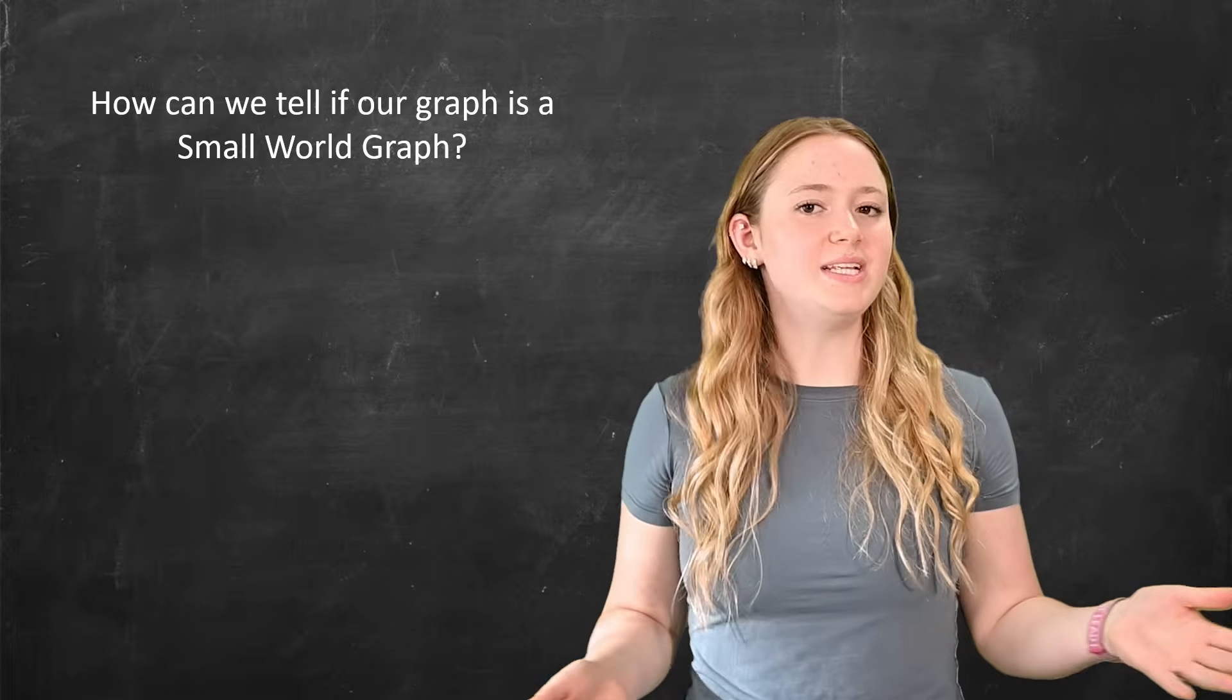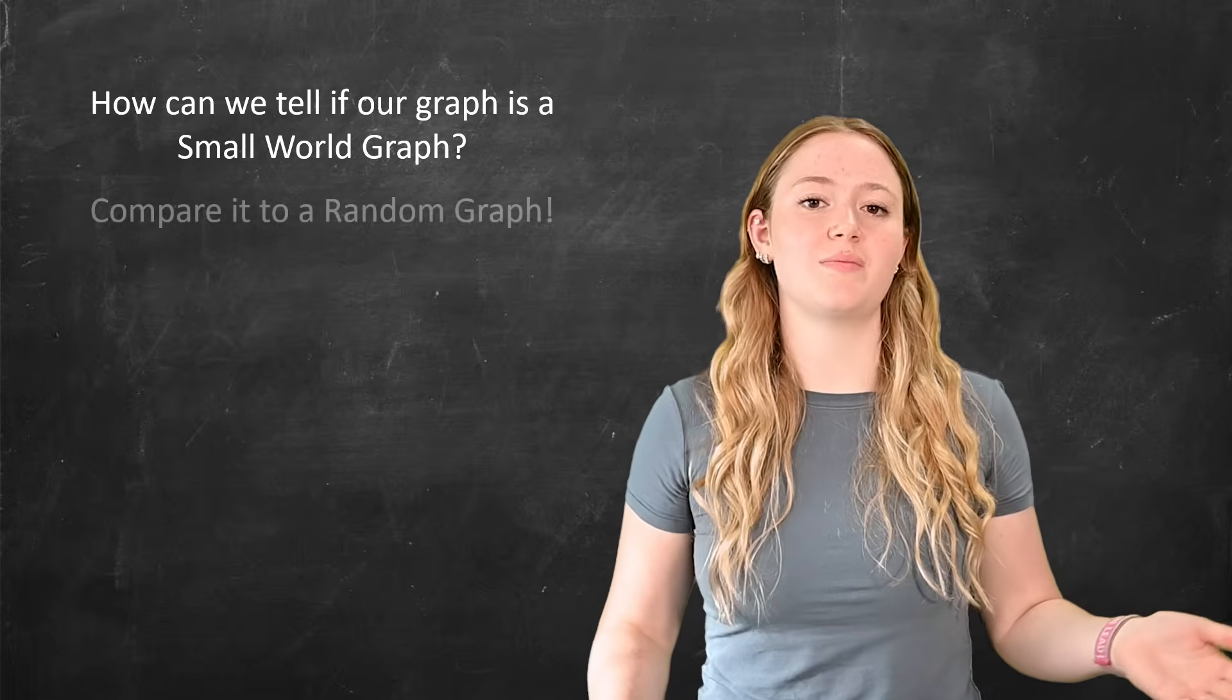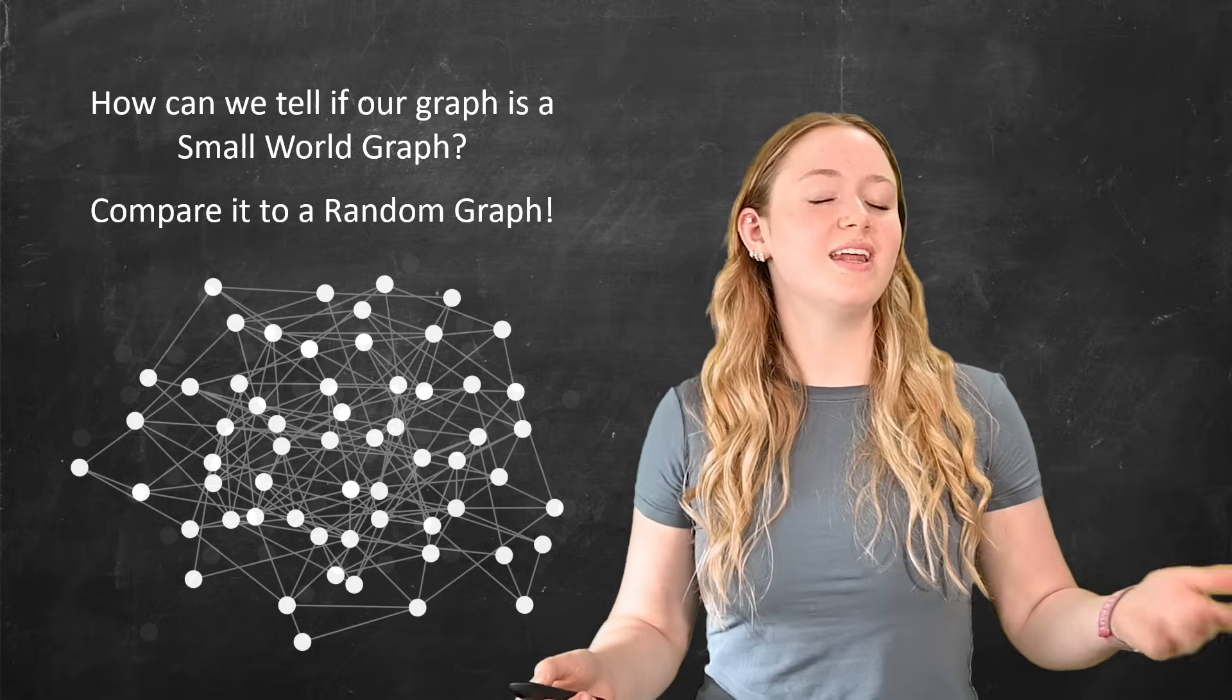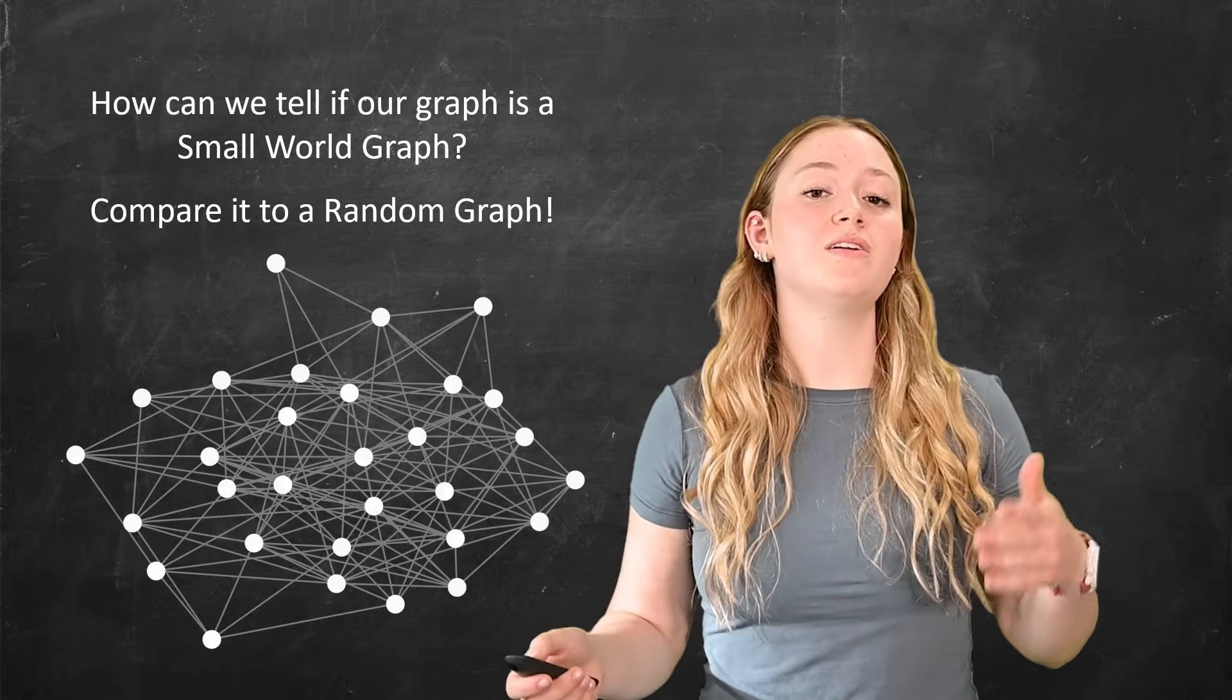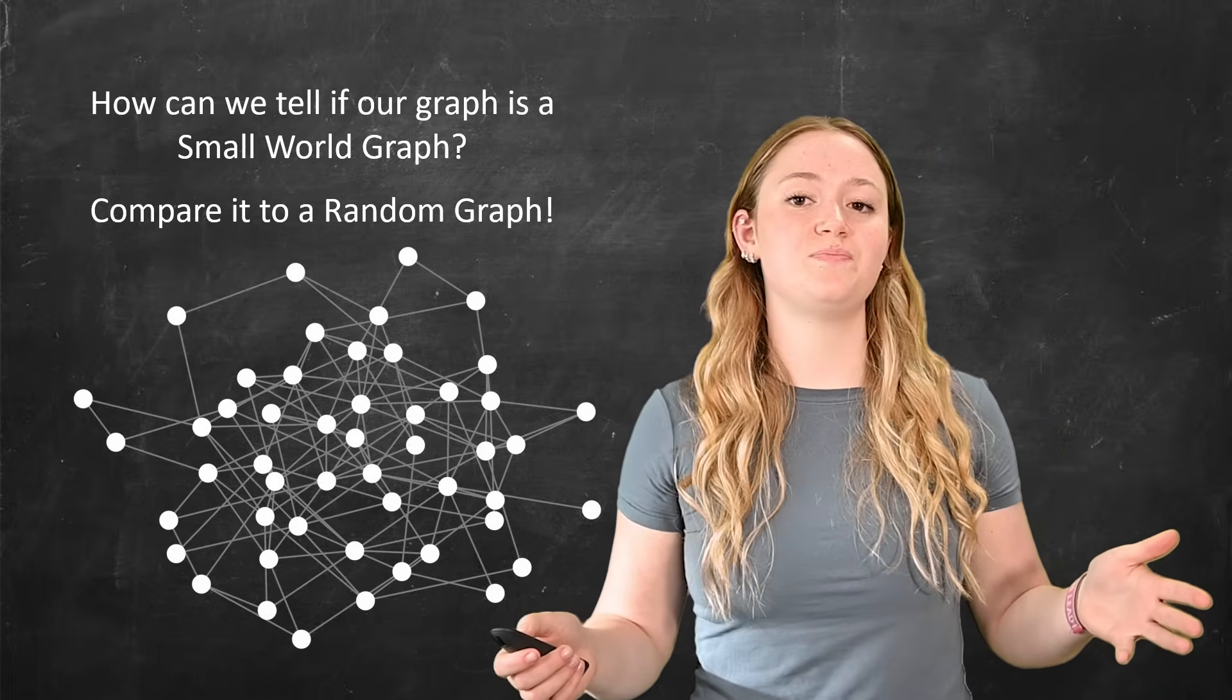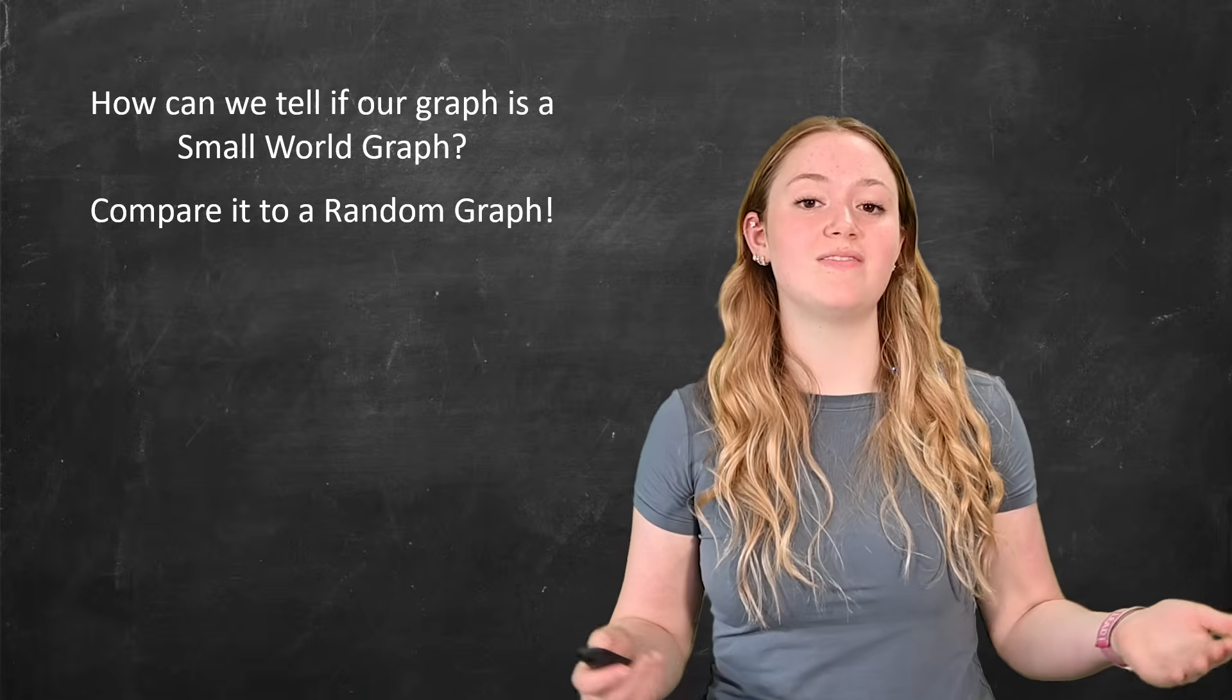But how do we tell if our graph is a small world graph? To do this, we compare it against a random graph. So I'm going to be showing a bunch of different random graphs that you can get a good feel for what they are, which all of these were generated through the Erdos-Renyi model that generates all of these different types of graphs.